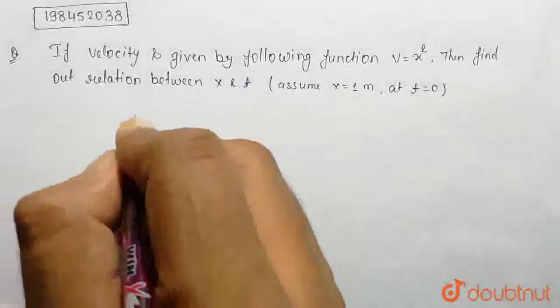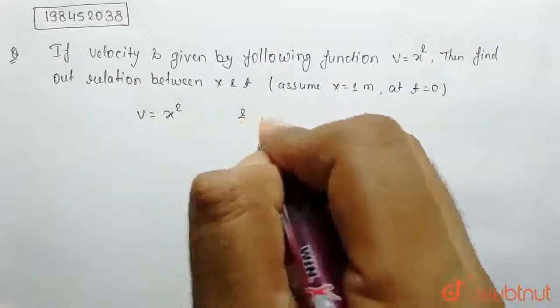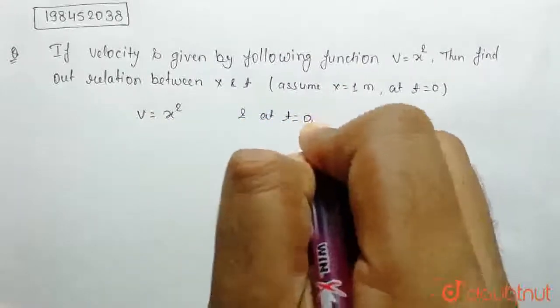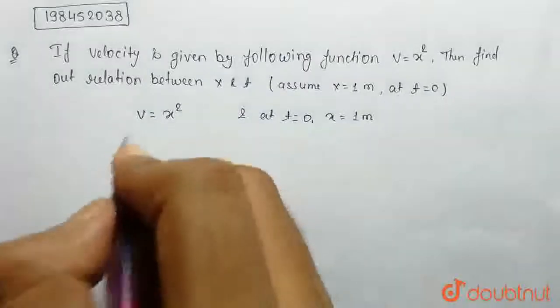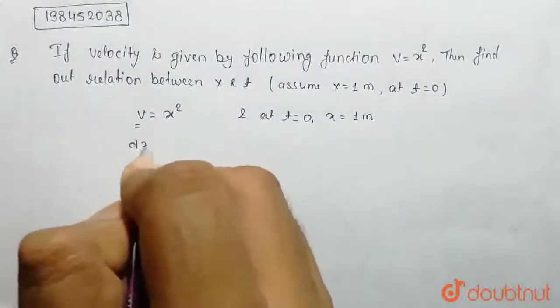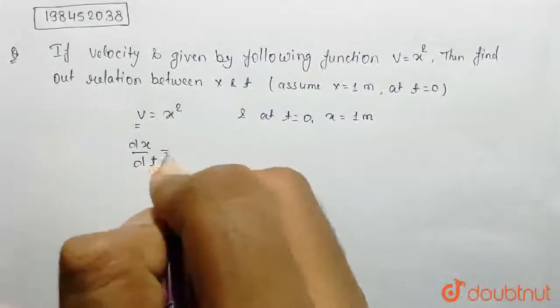What have we done? Here, v is equal to x squared and at t is equal to 0, x value 1 meter is given. v can be written as dx by dt is equal to x squared.